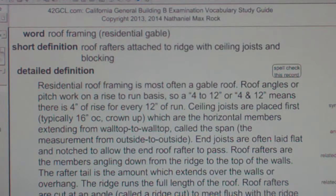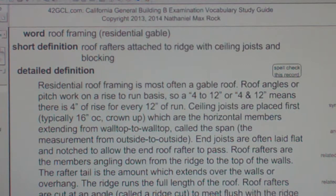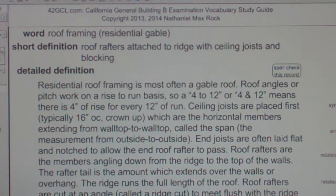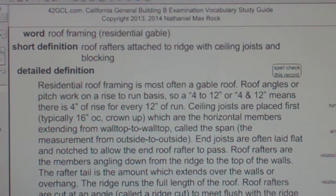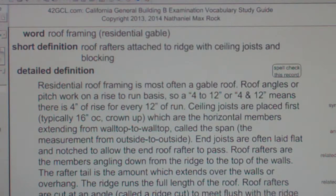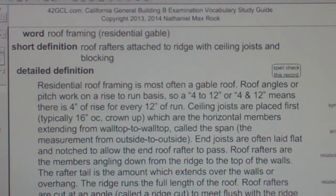Gable braces are used to enclose the end trusses, and sway braces angle up from the flat end ceiling joists to the ridge to provide lateral support. Blocking is used to enclose rafter bays and intermittently to resist rotation of roof rafters. Roof rafters are covered in plywood sheathing.